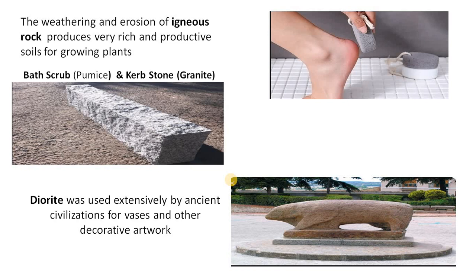The weathering and erosion of igneous rock produces very rich and productive soils for growing plants. Pumice can be used as a bath scrub — we can rub the pumice igneous rock on the foot so that dead cells will be erased and new cells form. Granite can be cut into decorative shapes and used as a carved stone. Diorite, another rock, has been used since ancient times as decorative artwork.